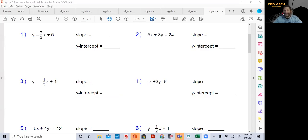Welcome to GED Math in 30 Days. In our last lesson, I showed you how to find the slope of a linear equation given in slope intercept form, which is y equals mx plus b. In today's lesson, I'm going to show you how to find the slope from standard form.